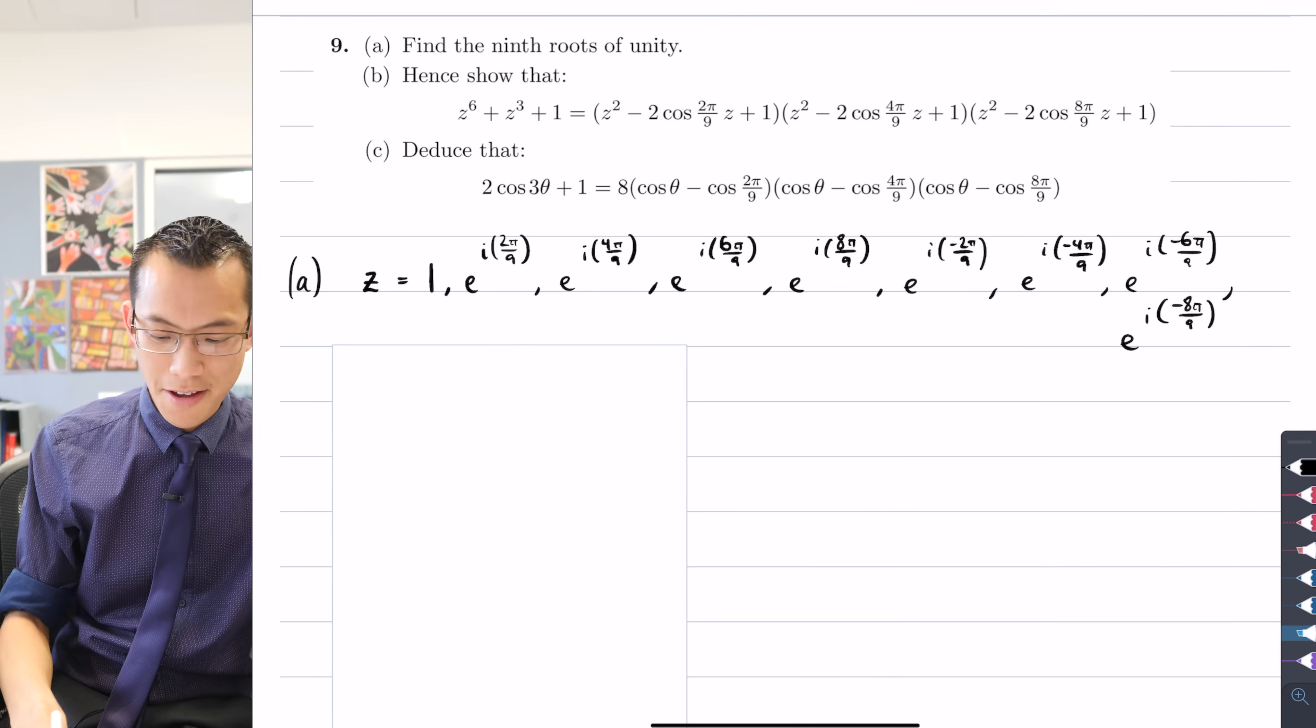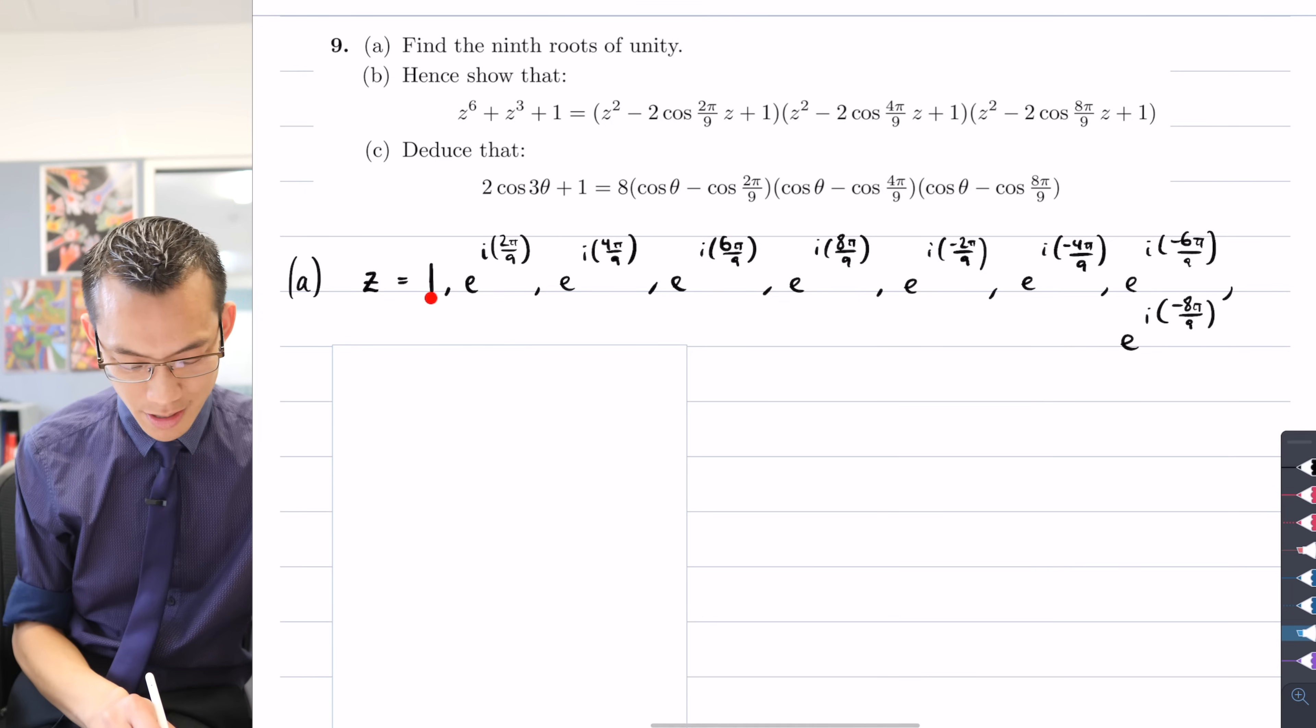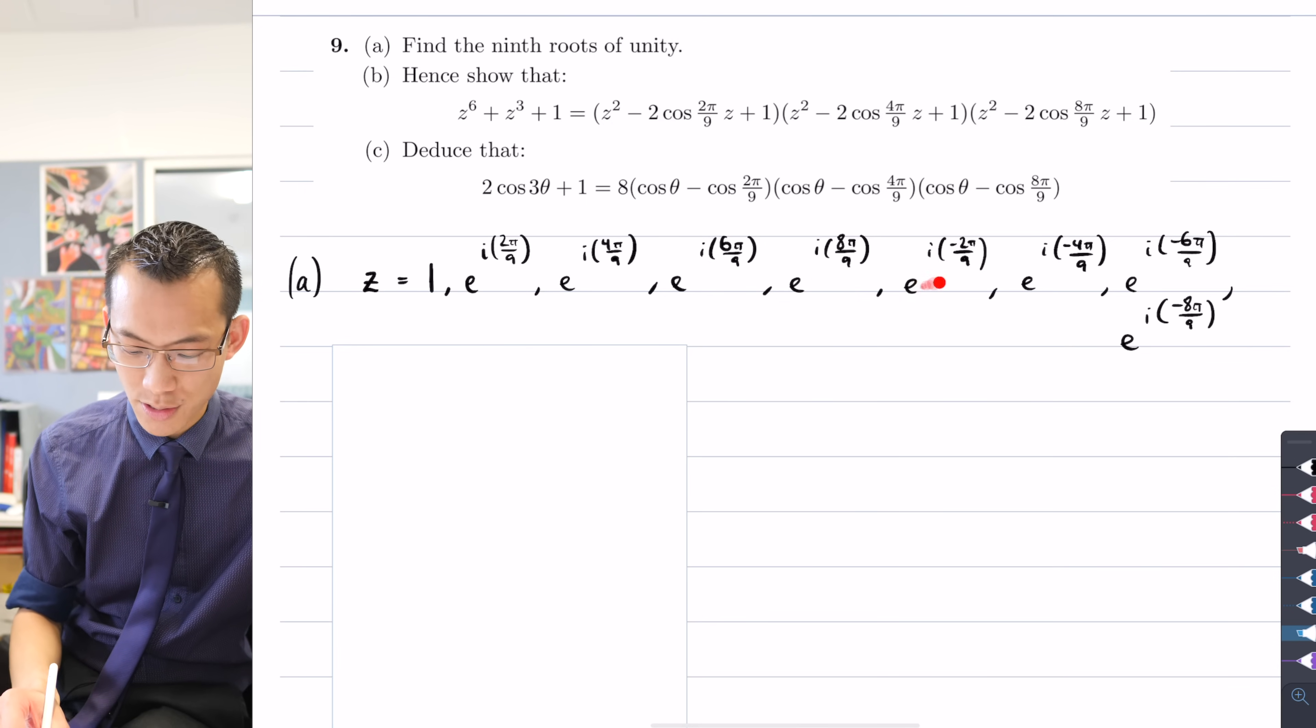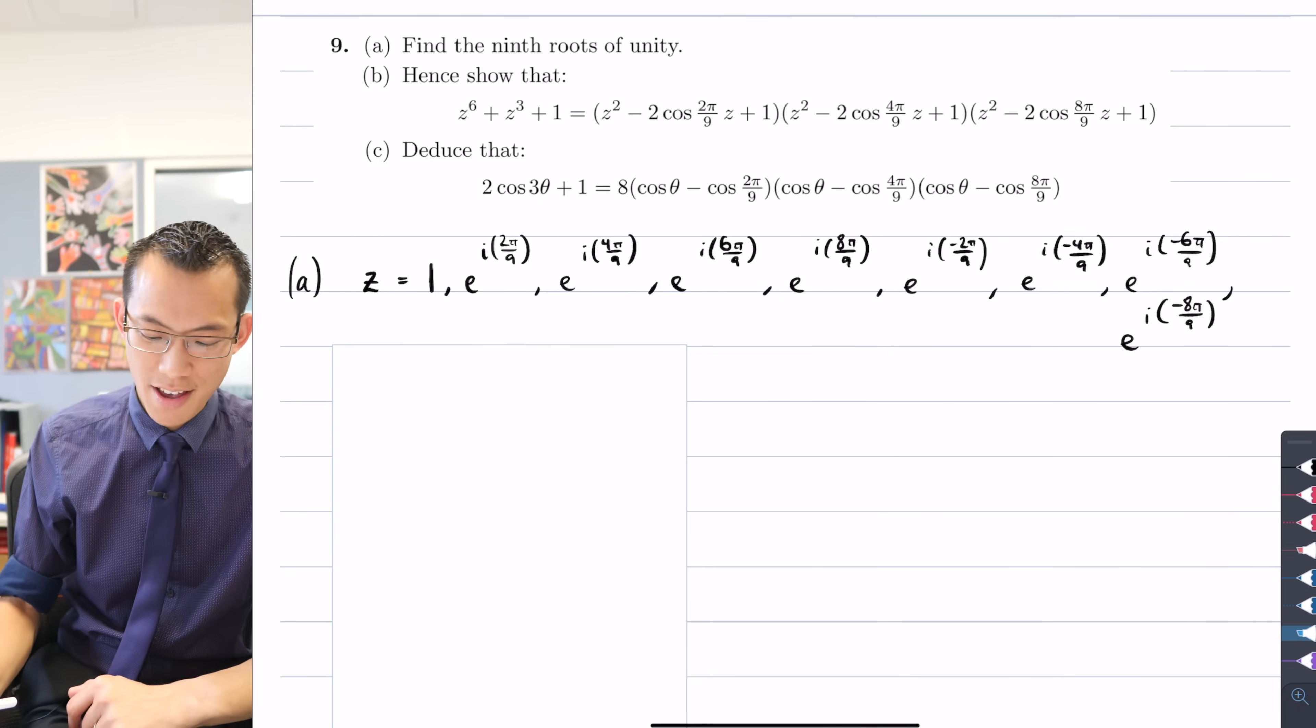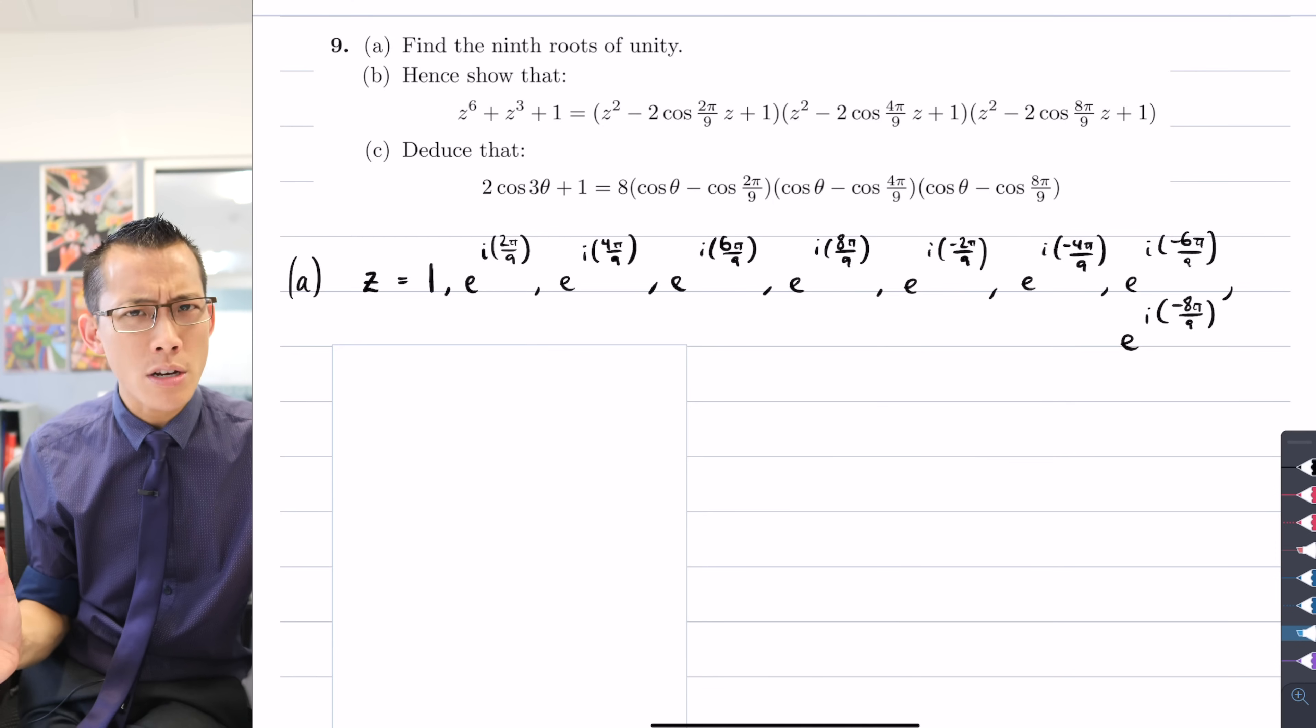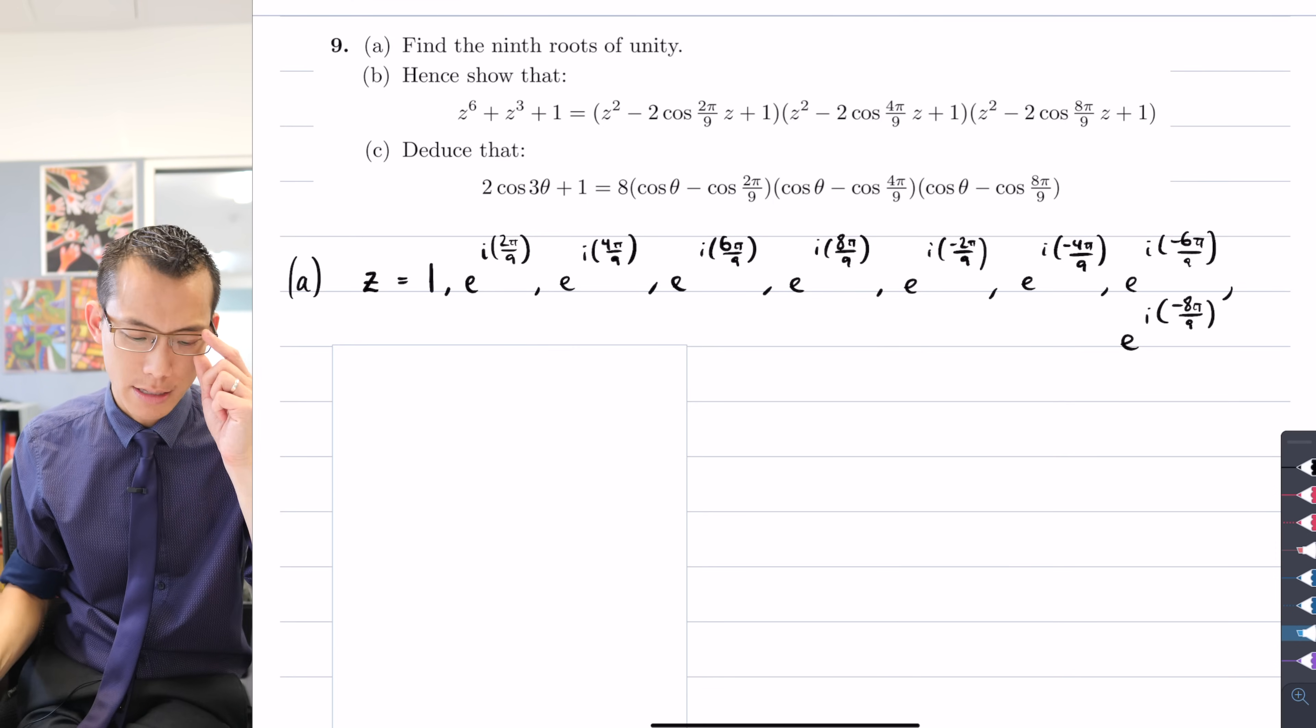So when you have a look, make sure you got them all. You've got 1, 2, 3, 4, 5, 6, 7, 8, 9. Nine ninth roots of unity. Everything's great. So those are the ninth roots. That's all that part A is asking for.